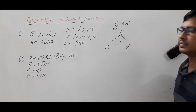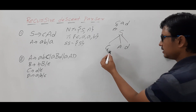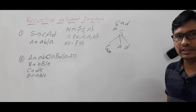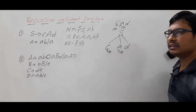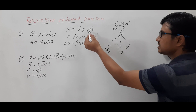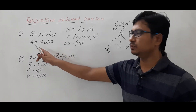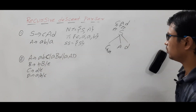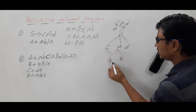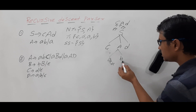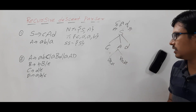The descent pointer and input pointer are both pointing to C — they match. So the descent pointer shifts to A and the input pointer shifts to the next character. The descent pointer is now pointing to A, which is a non-terminal (capital A in the non-terminals list). Since it is a non-terminal, it looks at the available productions. There are two productions; it will choose the first one, which is AB. The descent pointer and input pointer are both matching.